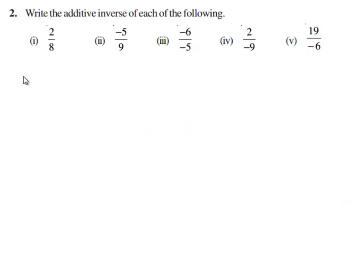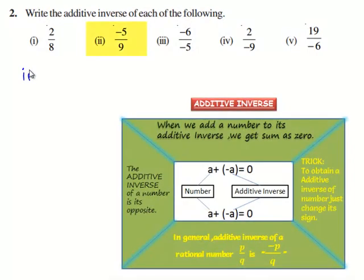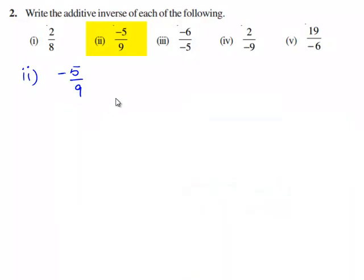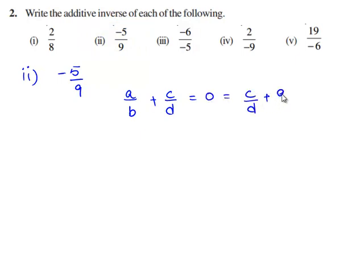Now the second bit of the question is to find the additive inverse of minus 5 by 9. For every rational number a by b, there exists another rational number c by d such that a by b plus c by d is equal to 0, which is equal to c by d plus a by b. Here, c by d is called the additive inverse of a by b, and also a by b is called the additive inverse of c by d.